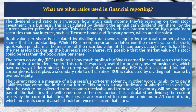The return on equity ratio tells how much profit a business earned in comparison to the book value of its stockholders' equity. This ratio is especially useful for privately owned businesses, which have no way of determining the current value of owner's equity. ROE is also calculated for public corporations, but it plays a secondary role to other ratios. ROE is calculated by dividing net income by owner's equity.